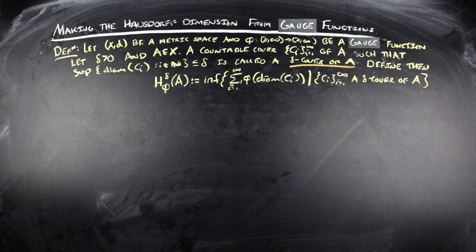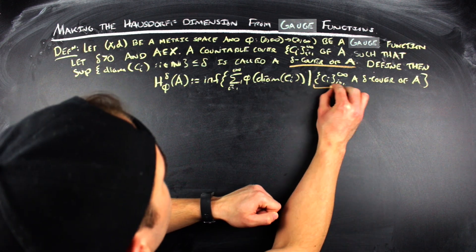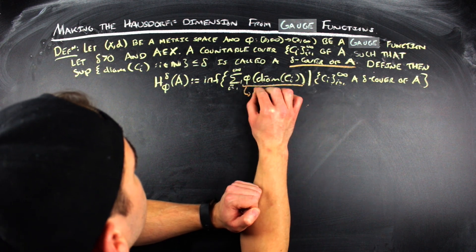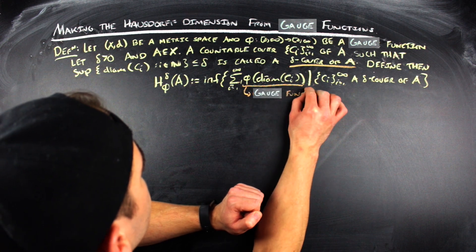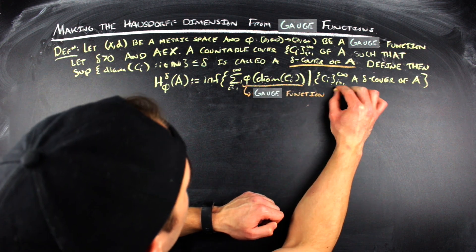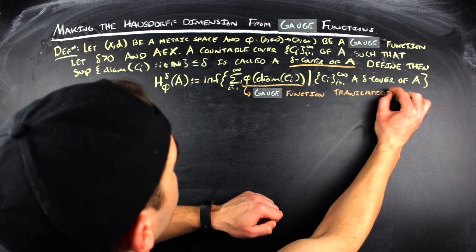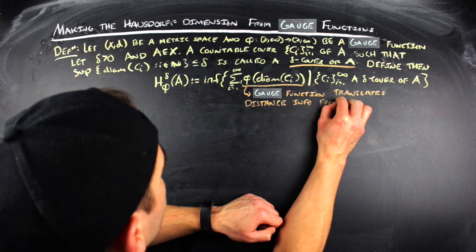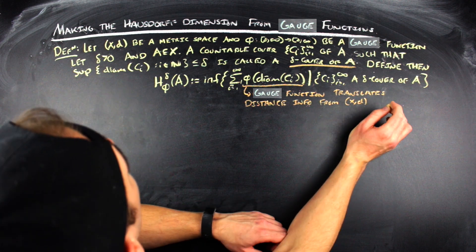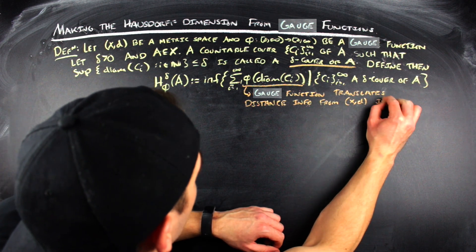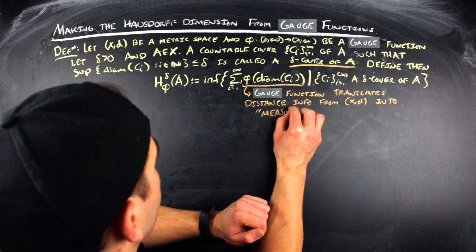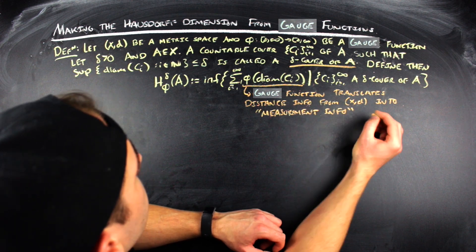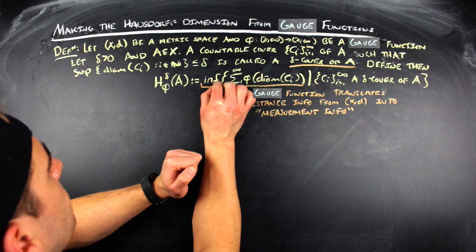A countable cover of A, such that the supremum of the diameters of those elements of the cover are less than or equal to δ, is said to be a δ-cover of A. Being a cover of a set just means that when you union all of those sets together, you're going to be a superset of the set that you care about. We define h_{φ}^δ(A) to be by definition equal to the infimum of the set of sums of φ of the diameter of these C_i's, as i ranges from one to infinity, such that those C_i's form a δ-cover of A.